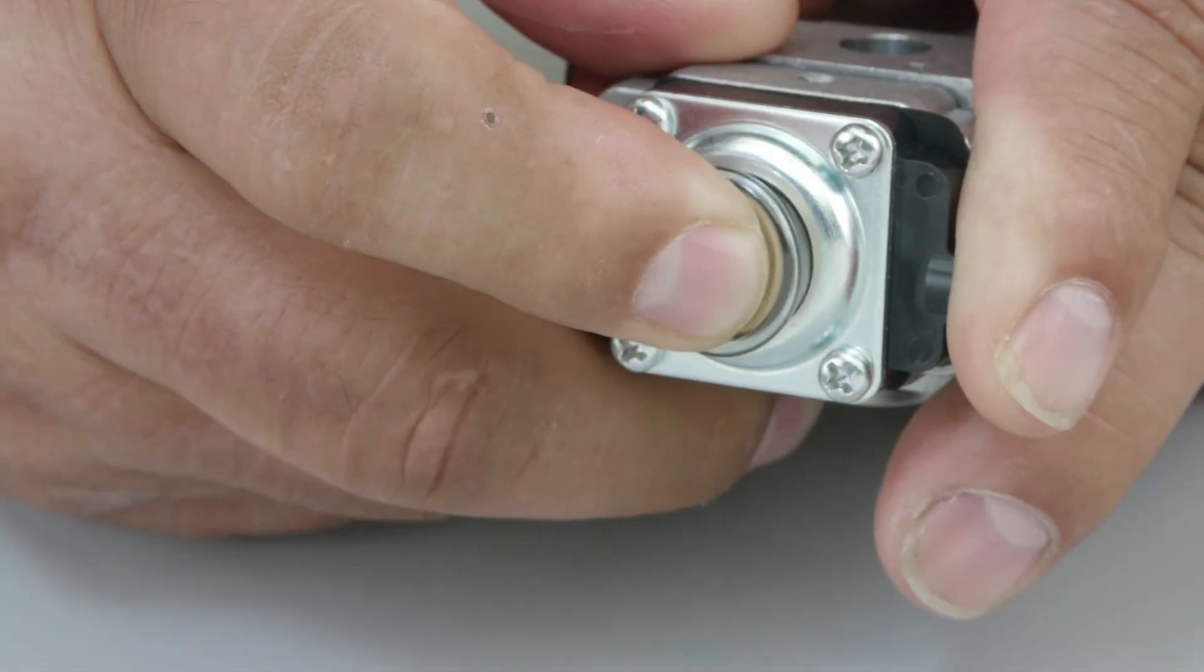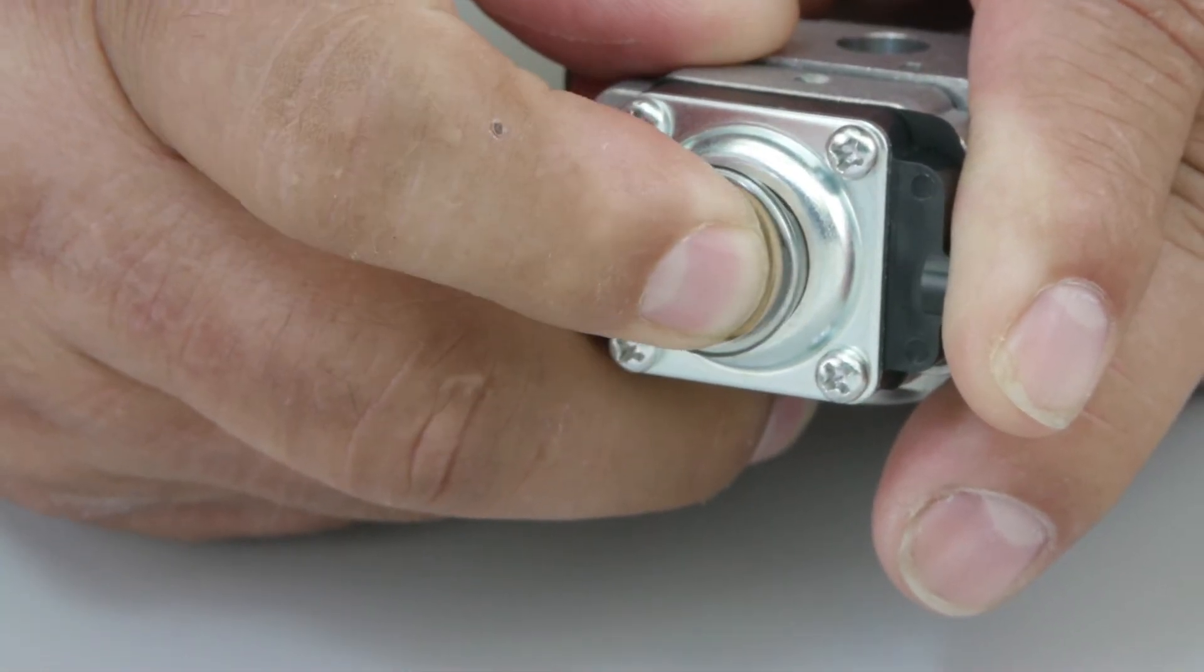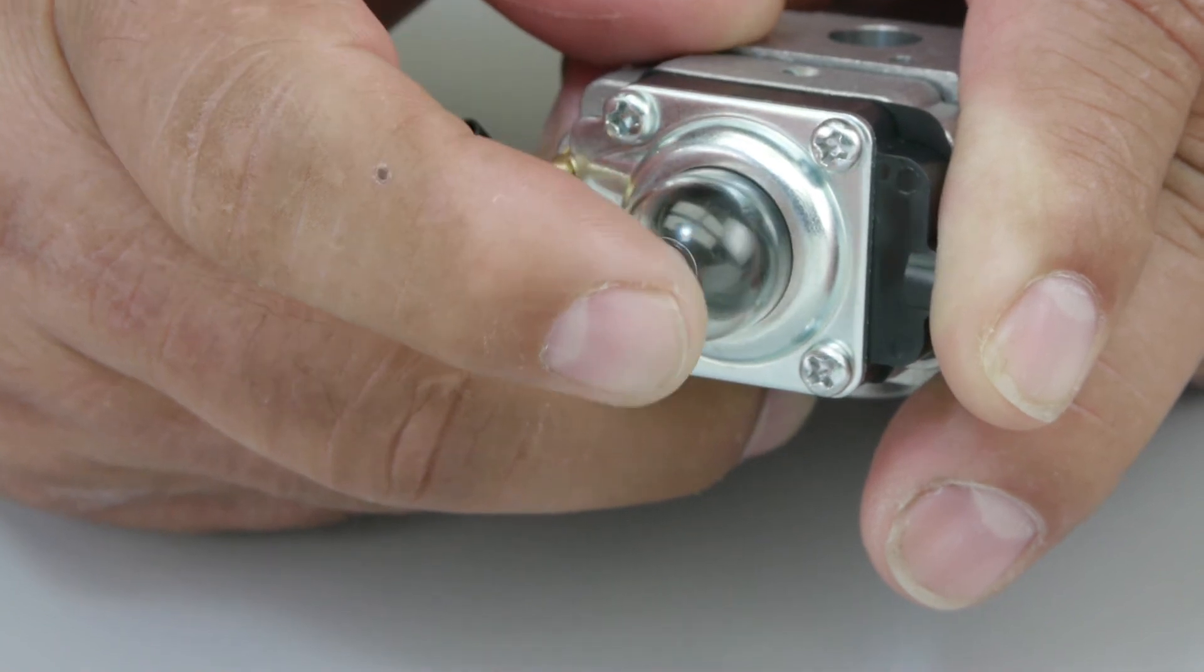If the primer pump valve doesn't seat properly or the primer bulb doesn't return to shape, replace the entire primer pump assembly.